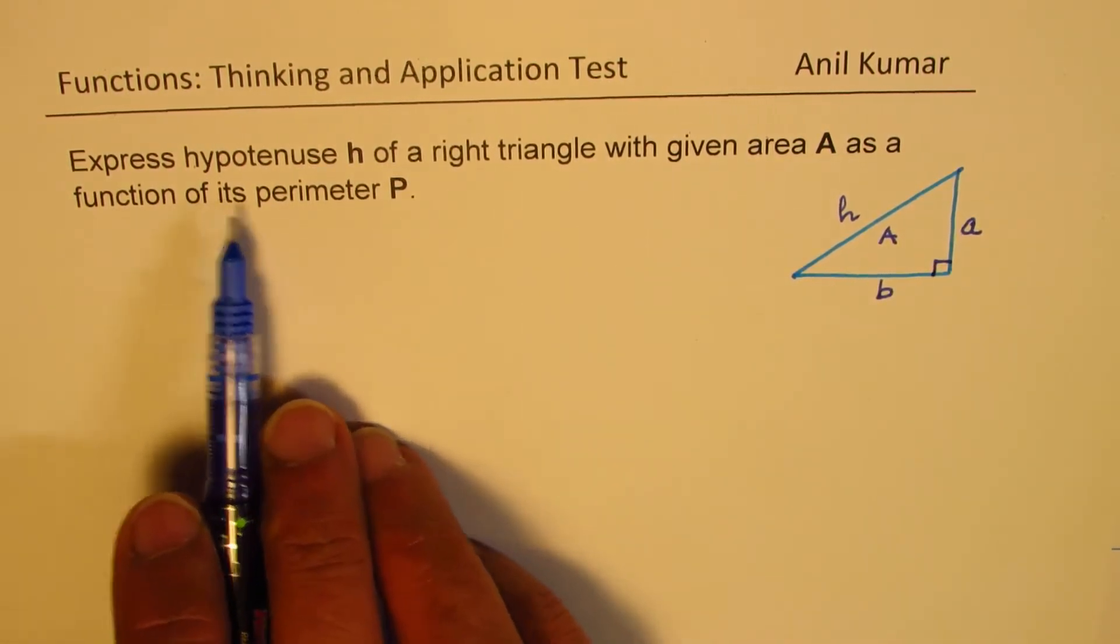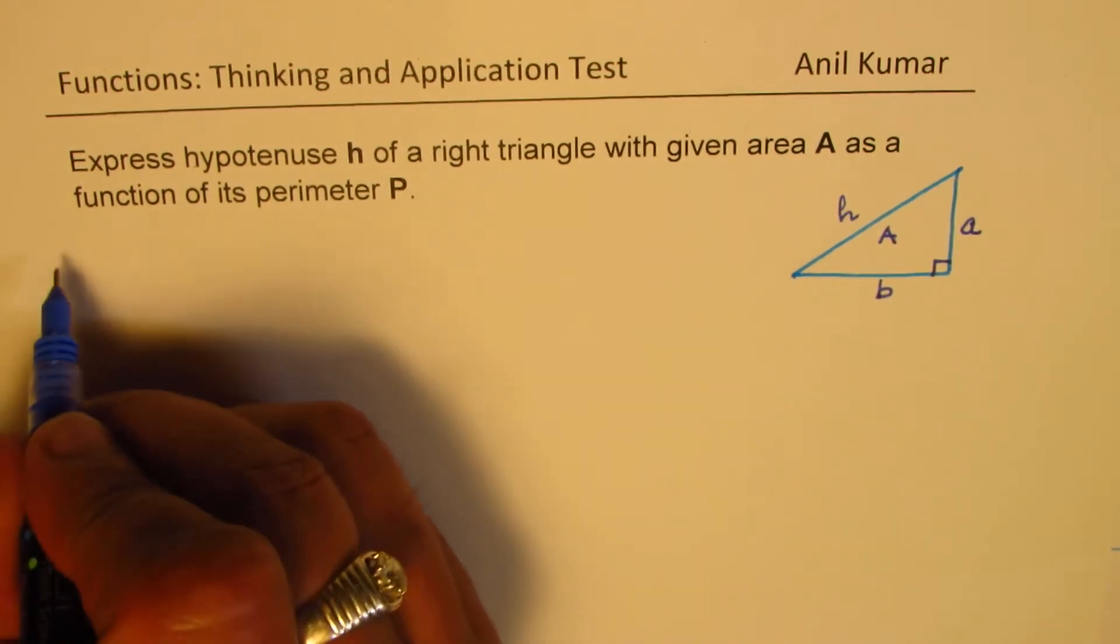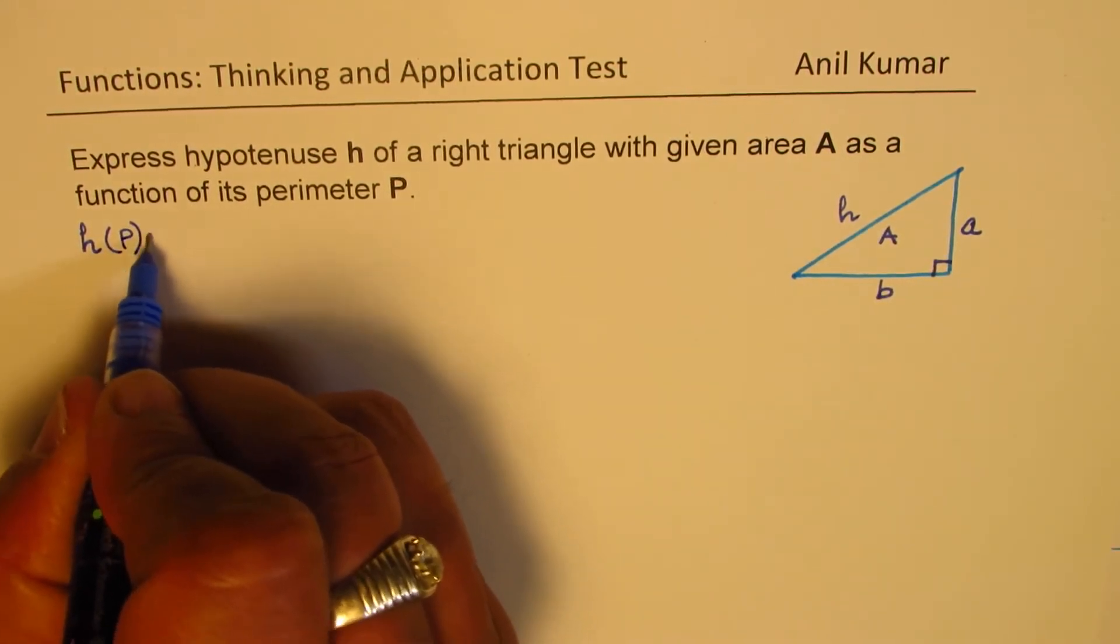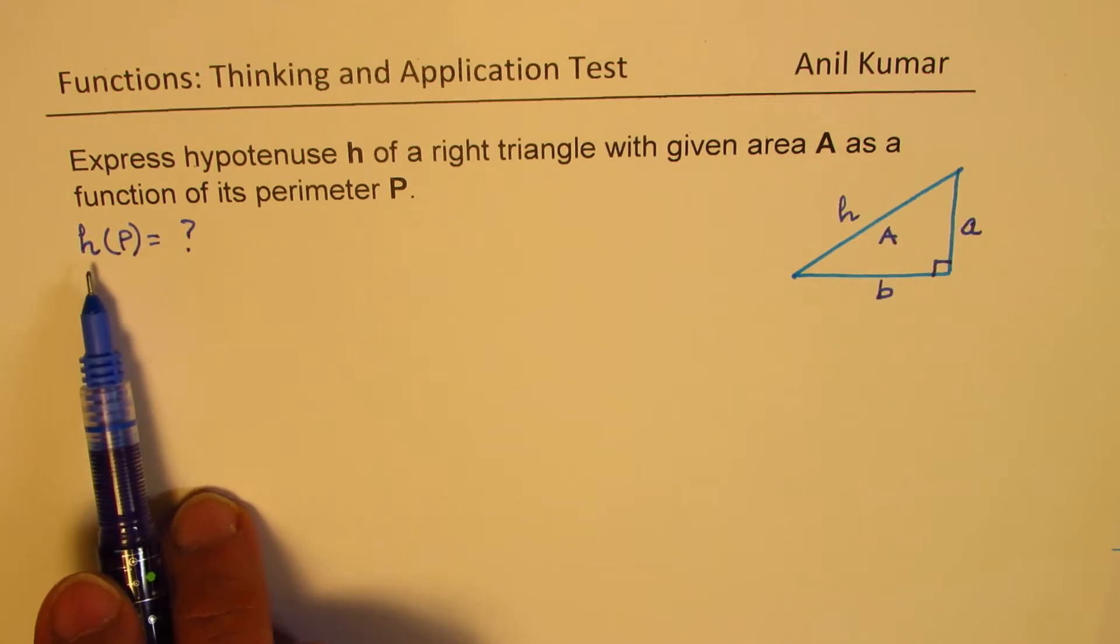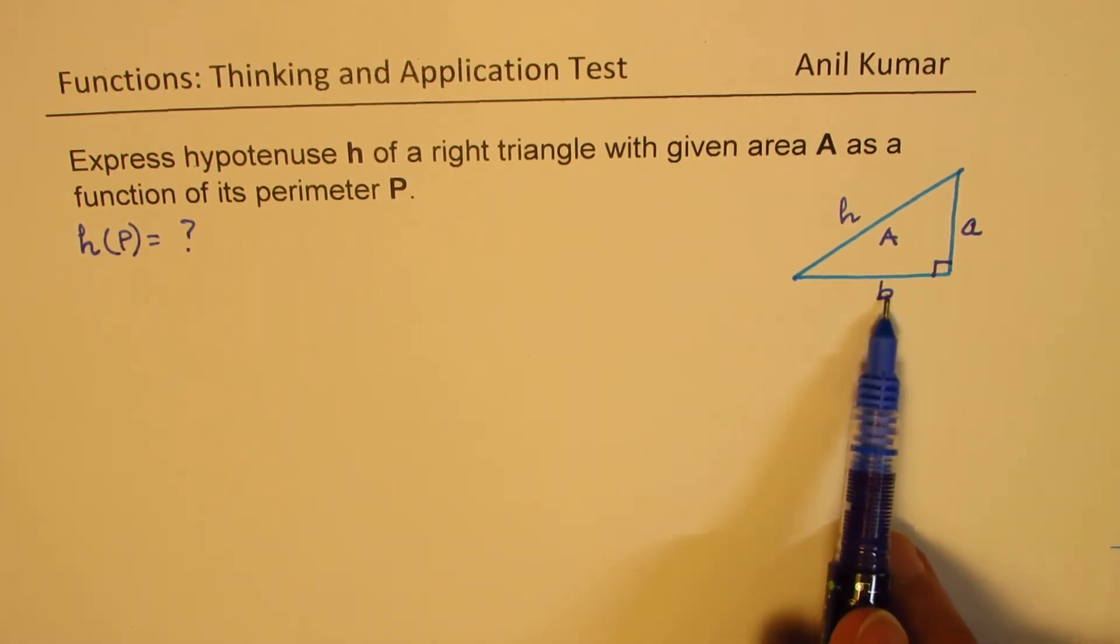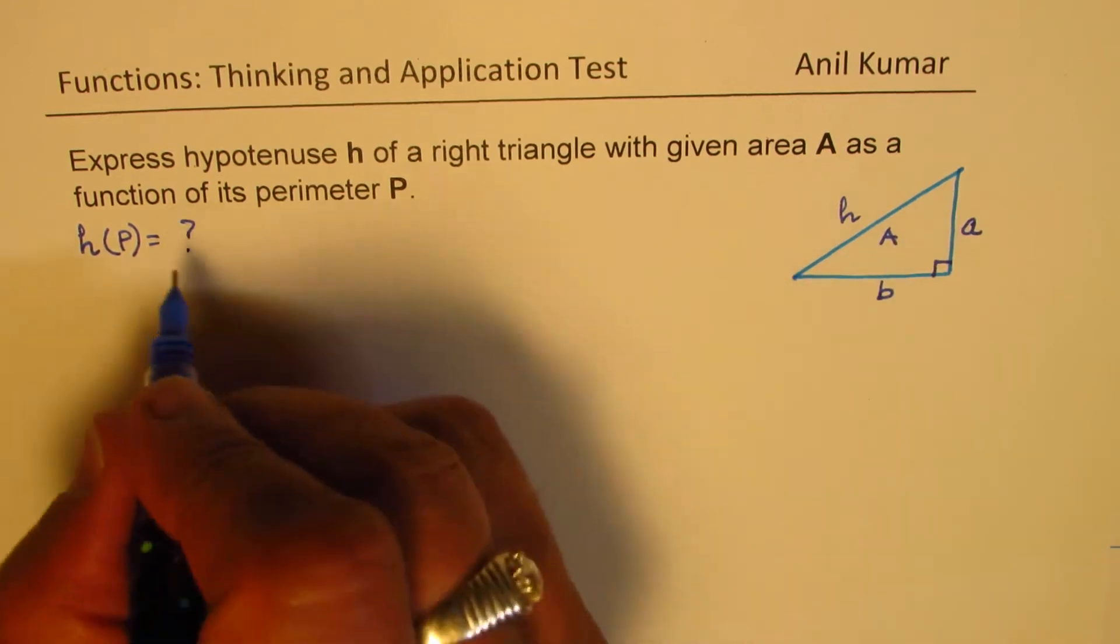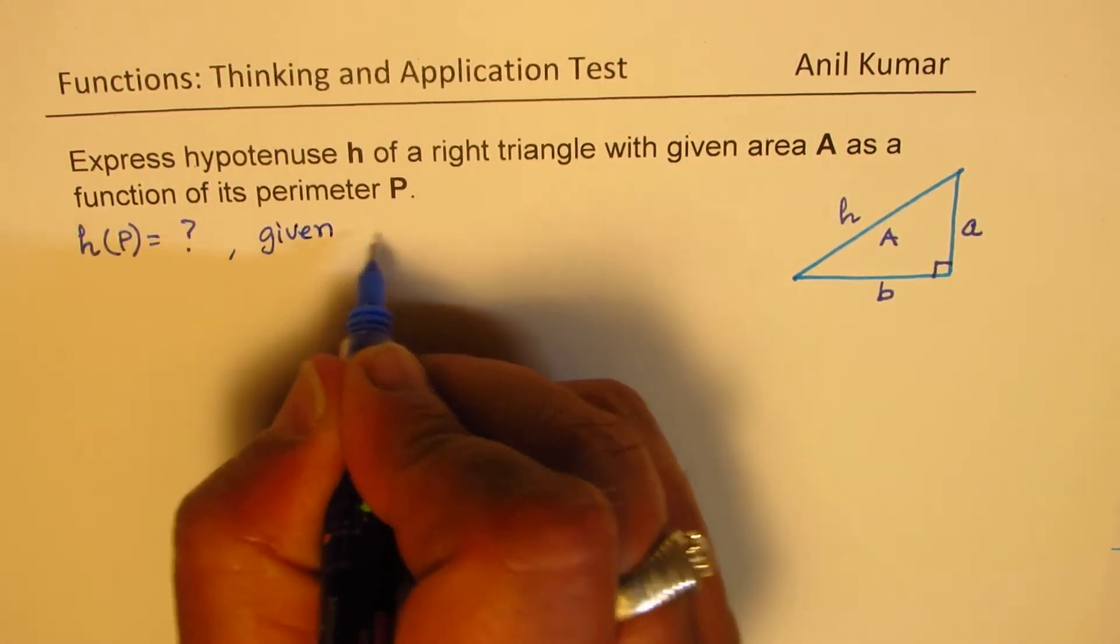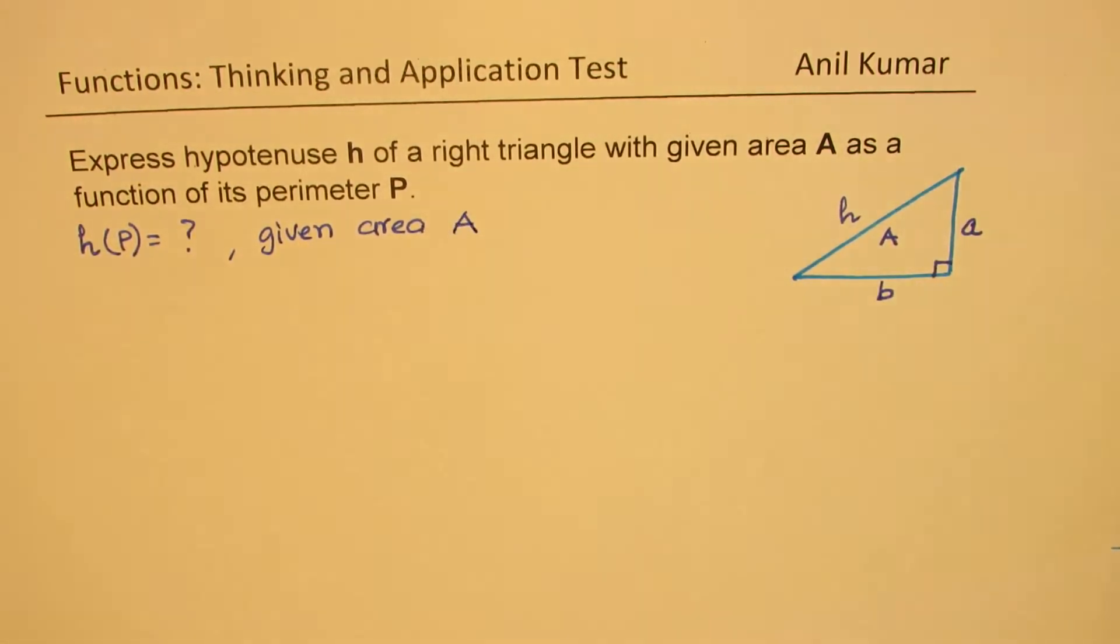We need to express hypotenuse as a function of P. That means we have to find what is h(P). So in our equation, we can have only two variables, h and P, not b and a. Here we are given area A. So for given area which is A for us, let us see how we can do it.